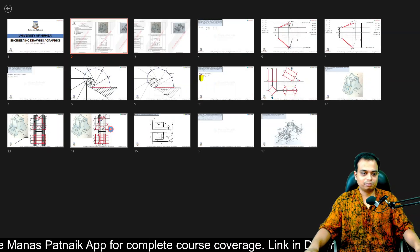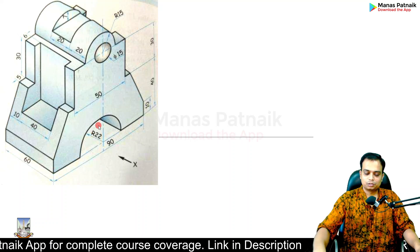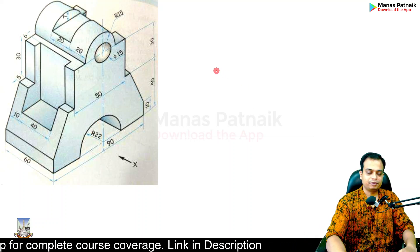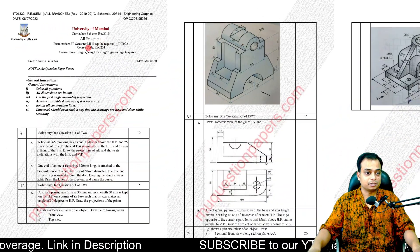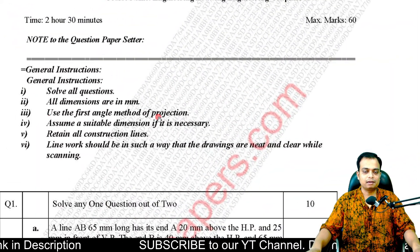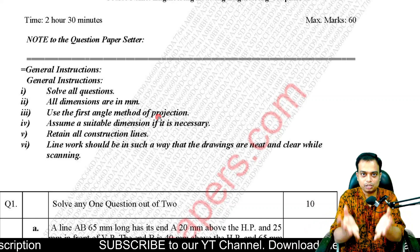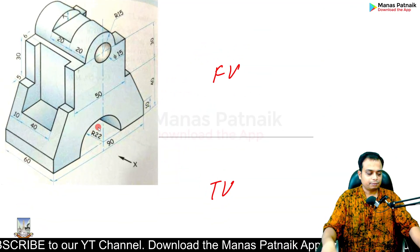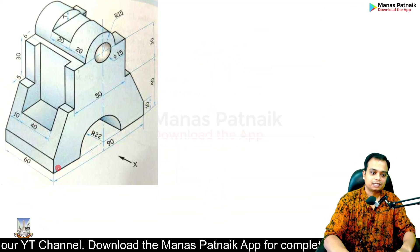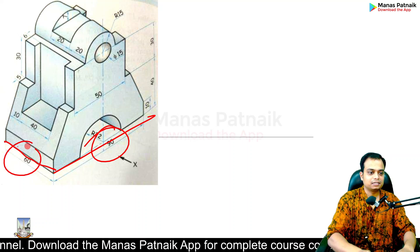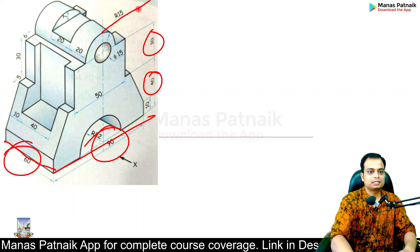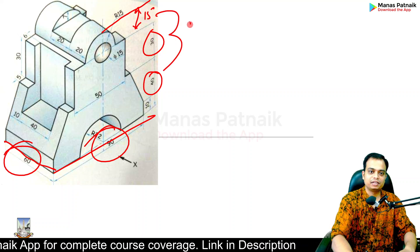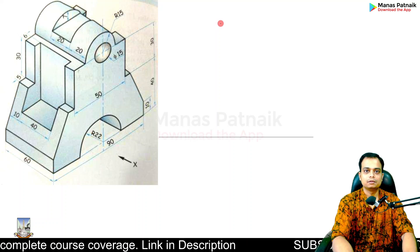Here is the partition line — above it is the front view and below is the top view. The question specifies using the first angle method of projection, meaning the object is above the HP and in front of the VP. The first step is working out the maximum dimensions: length is 90, width is 60, and height is 40 plus 30 plus 15 equals 85.